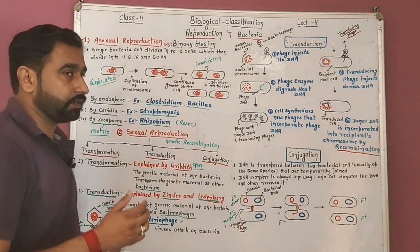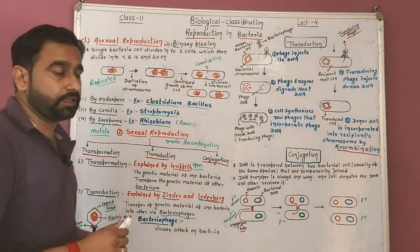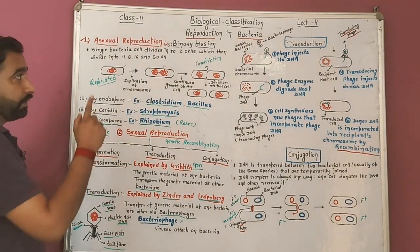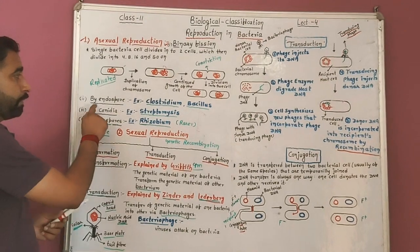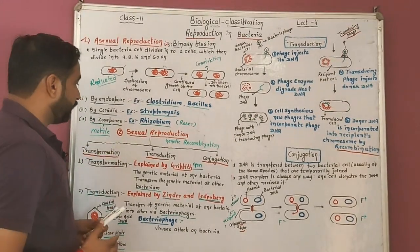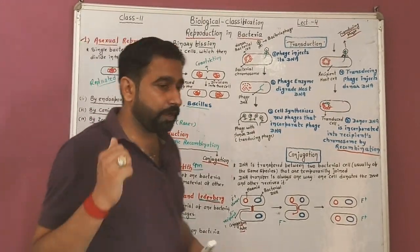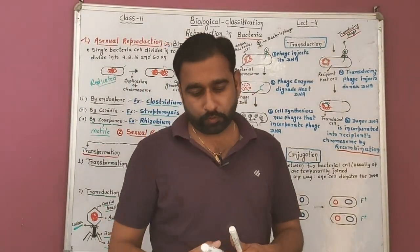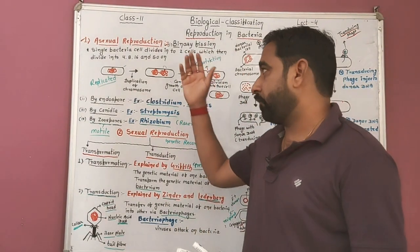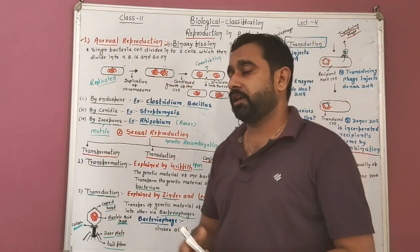What is asexual reproduction? In bacteria, asexual reproduction is done by binary fission, by endospore, by conidia, and by zoospore. So first of all, we discuss about binary fission.